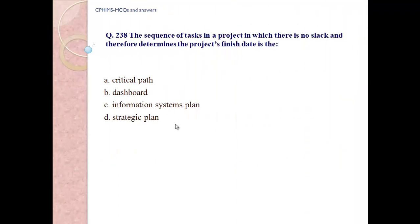Question number 238: The sequence of tasks in a project in which there is no slack and therefore determines the project's finish date is the: a) Critical path, b) Dashboard, c) Information systems plan, d) Strategic plan.